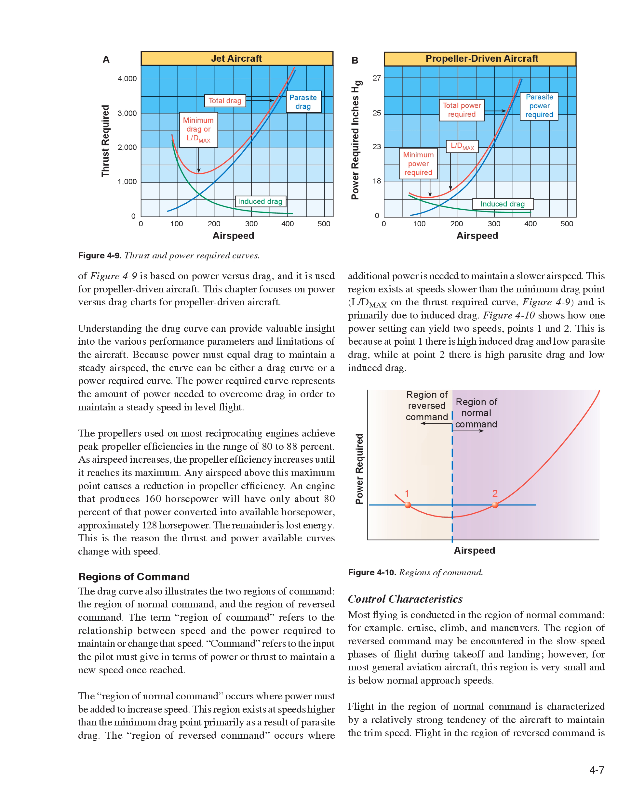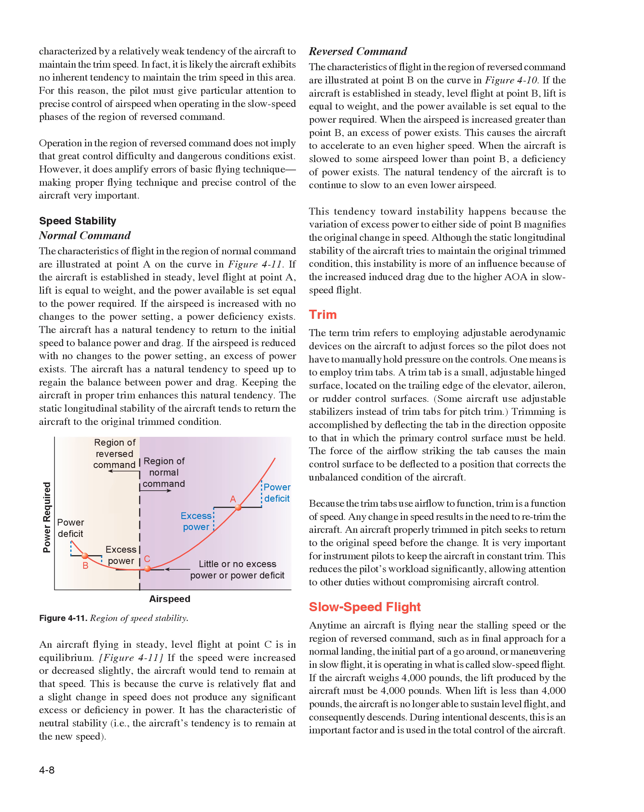Regions of Command — Control Characteristics. Most flying is conducted in the region of normal command, for example, cruise, climb, and maneuvers. The region of reversed command may be encountered in the slow-speed phases of flight during takeoff and landing; however, for most general aviation aircraft, this region is very small and is below normal approach speeds. Flight in the region of normal command is characterized by a relatively strong tendency of the aircraft to maintain the trim speed. Flight in the region of reversed command is characterized by a relatively weak tendency — in fact, the aircraft likely exhibits no inherent tendency to maintain the trim speed. Operation in this region amplifies errors of basic flying technique, making proper technique and precise control very important.